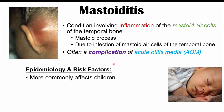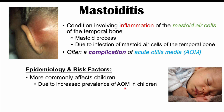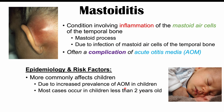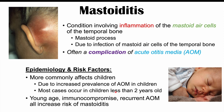This condition more commonly affects children because of the increased prevalence of acute otitis media in children. Because of that increased prevalence of middle ear infection, children are more likely to have this complication occur. In fact, most cases of mastoiditis occur in children less than two years of age. Risk factors include young age, being immunocompromised, and being prone to recurrent acute otitis media episodes.